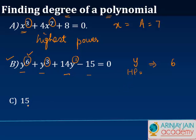How about this one? You just have 15. There's no variable given here, so what kind of polynomial is this? This is a constant polynomial, and the degree of a constant polynomial is equal to 0.